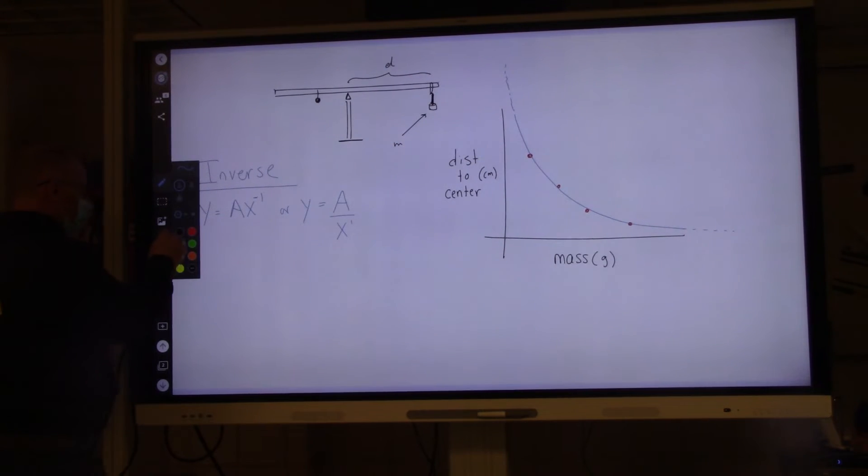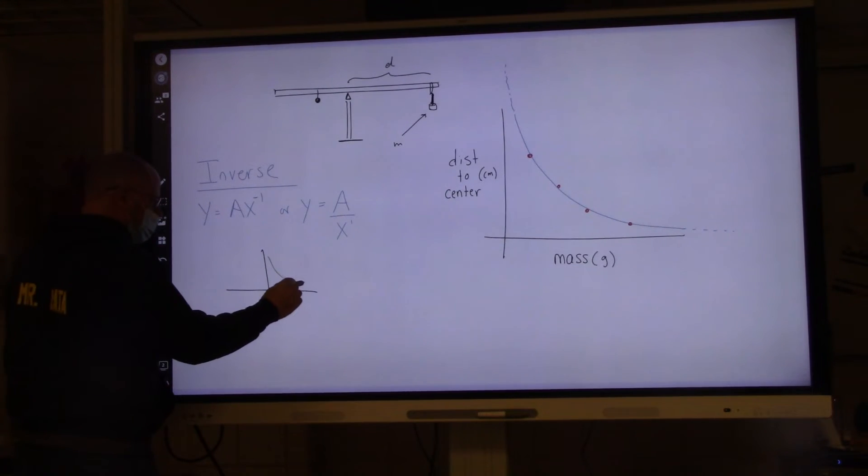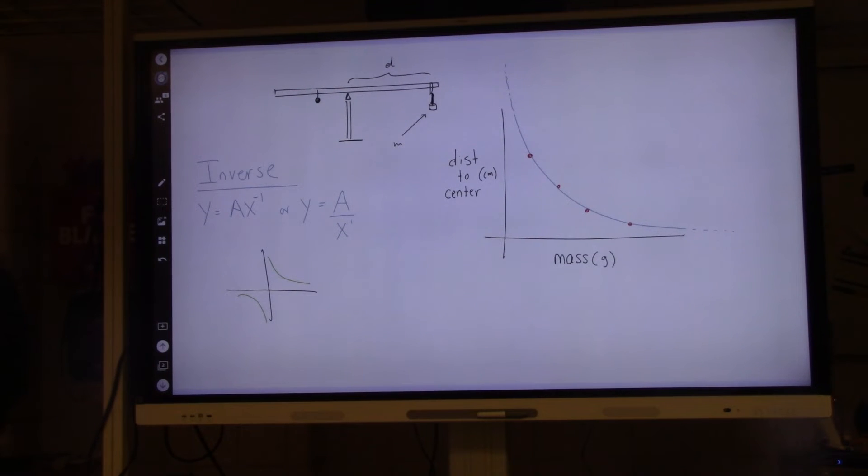Does this seem vaguely familiar to you from your math class? Actually, in your math classes, you would have seen it like this. If you had all four quadrants, you would have seen something that looked like this. That's what I was saying. Right? You've seen that before?